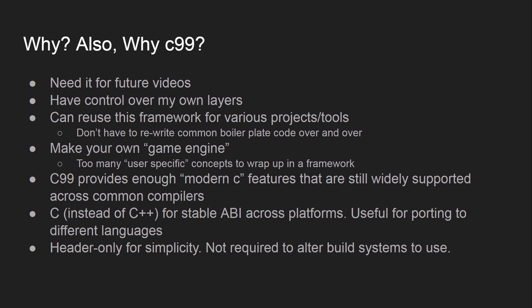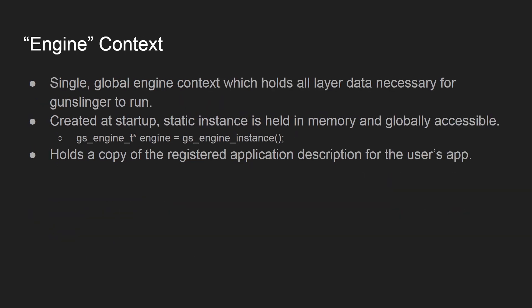A common question is why C99 instead of C++. I need this framework for future videos on game engineering concepts, and I'm a tools and engine developer by trade — I like writing my own stuff. Since it's a framework and not an engine, it could be used to make game engines. C99 provides enough modern C features widely supported across all common compilers. Using C instead of C++ gives a stable ABI across platforms, which is useful for cross-platform support and porting to other languages. The library is header-only for simplicity — dropping in a library without compiling or altering build systems is incredibly useful.